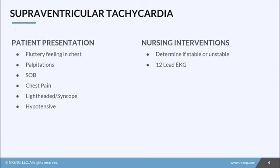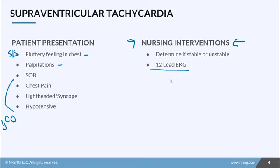When people come in with SVT, their main signs and symptoms are a fluttery feeling in the chest, palpitations because their heart rate is going so fast, shortness of breath, chest pain, lightheadedness, and hypotension — also because of decreased cardiac output. For nursing interventions, you've got to find out if they are stable or unstable, get a 12-lead EKG. Sometimes SVT can be confused with AFib with RVR, so that 12-lead EKG helps you know how to treat it correctly.